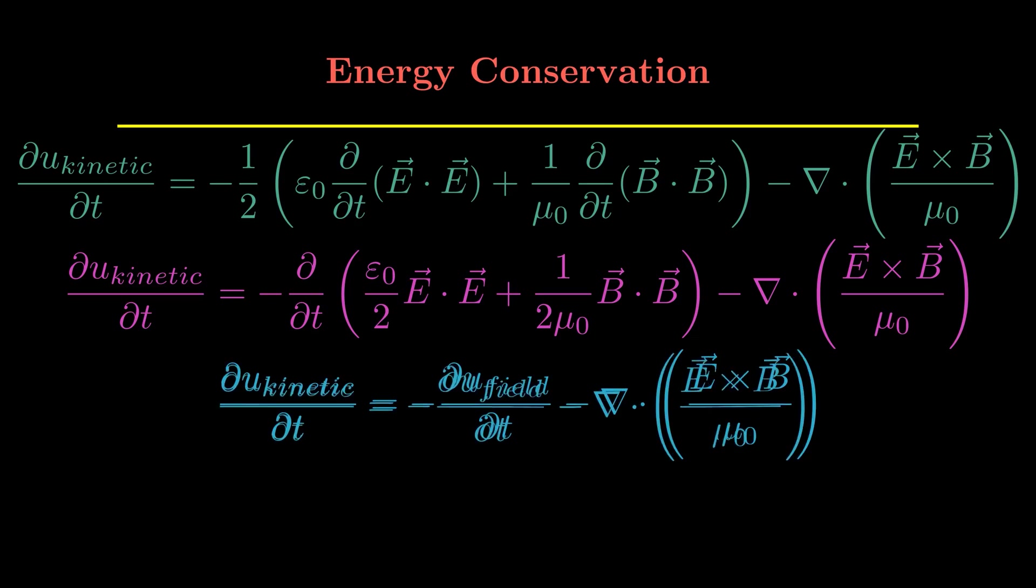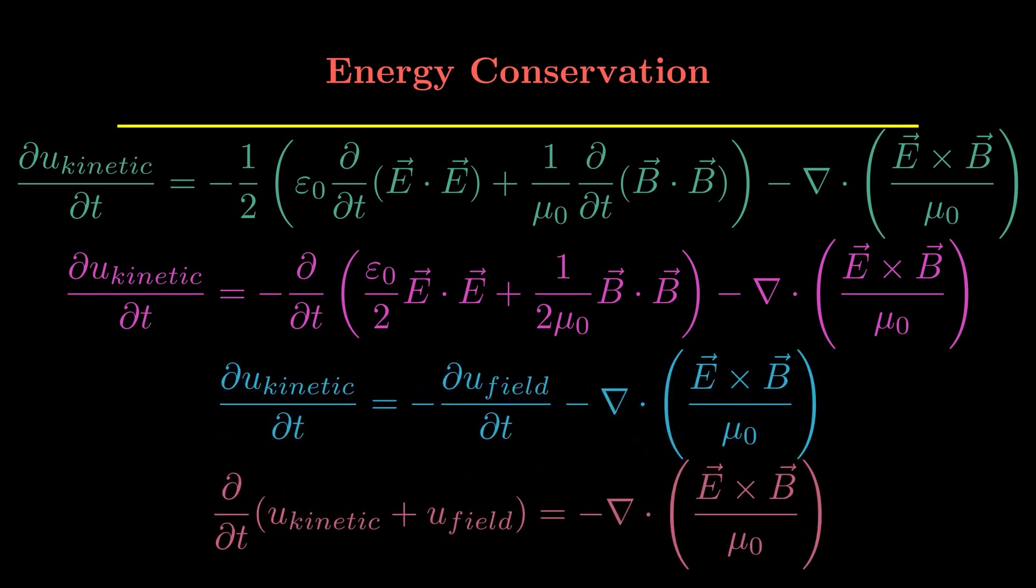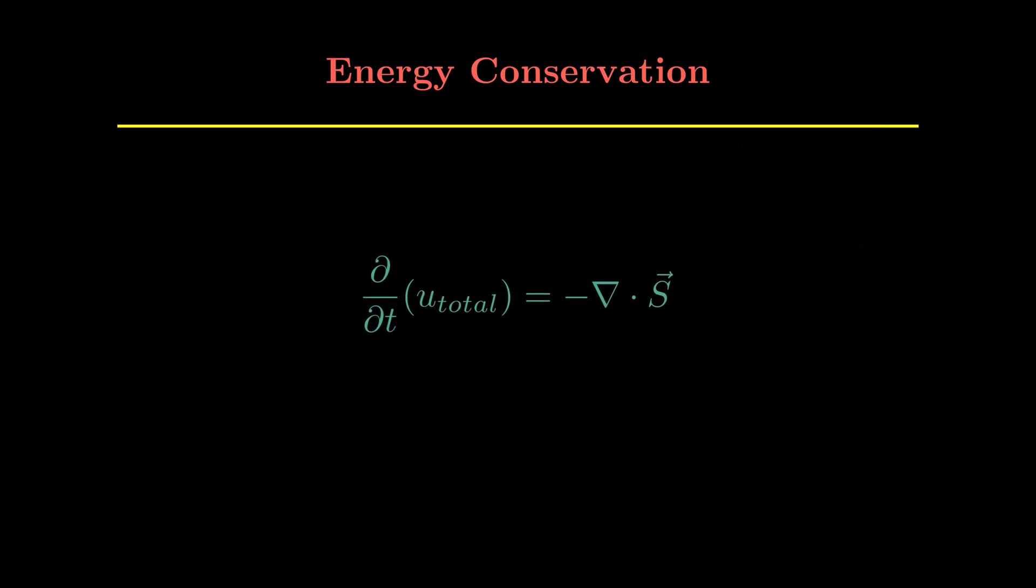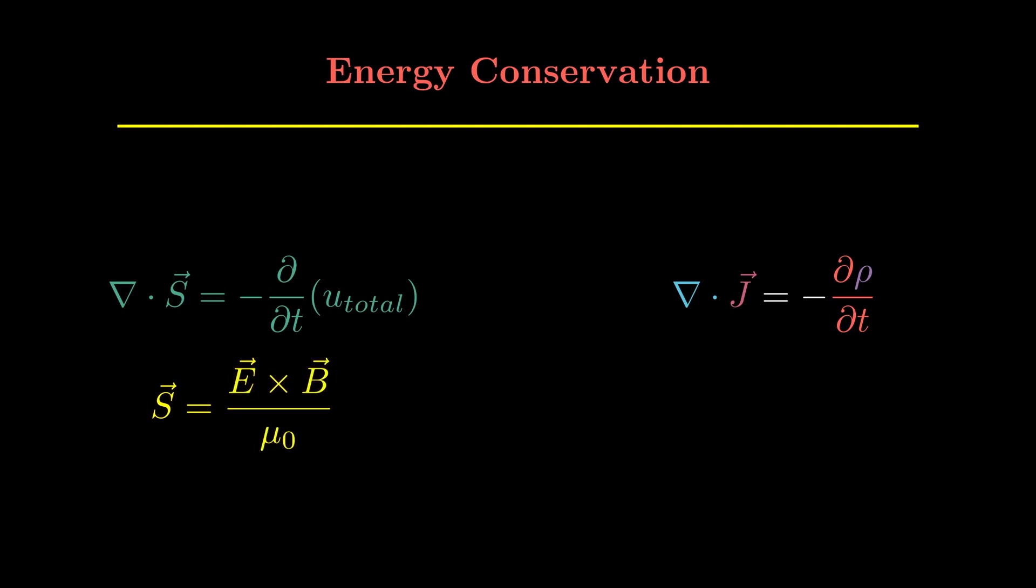So u_kinetic plus u_field is kind of like some total energy density u_total. And these two equations look a lot similar, so we just flip the sides and you see u_total is the total energy density, and S is what we normally know as the Poynting vector.